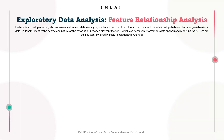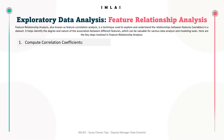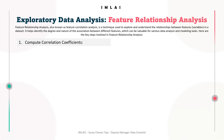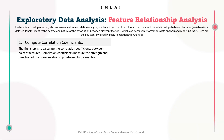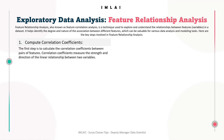We will perform feature relationship analysis in five or six steps. The first step is to compute correlation coefficients — calculating the correlation coefficients between pairs of features. Correlation coefficients measure the strength and direction of the linear relationship between two variables. The most commonly used is the Pearson correlation coefficient.